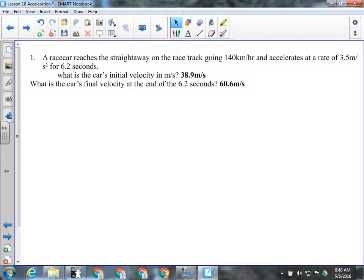Okay, for this question, it starts out and it says, the race car reaches the straightaway on the track going this fast. So this is the start of the question. So this number here is our initial velocity, and that's the thing that sometimes people get confused with with the wording. So it's going this fast, then it accelerates at 3.5 meters per second squared for 6.5 seconds. What's the car's initial velocity in meters per second? So we've got to convert kilometers per hour to meters per second. Everybody follow me there.